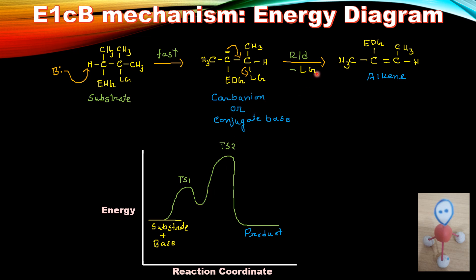The next step is the slowest step, so that means energy requirement will be highest. So it reaches transition state 2 and then gives the product. E2 is the activation energy of the E1CB mechanism.